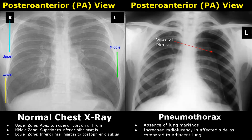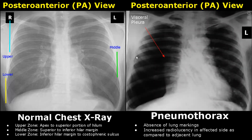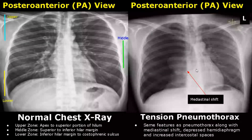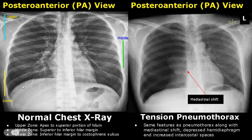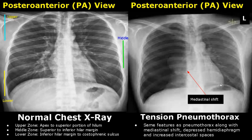Here is another image of a right-sided pneumothorax. A tension pneumothorax will have additional features such as a mediastinal shift and a depressed hemi-diaphragm. Normally the right hemi-diaphragm is slightly higher than the left because of the liver, but here you can see it is actually a bit lower than the left hemi-diaphragm.